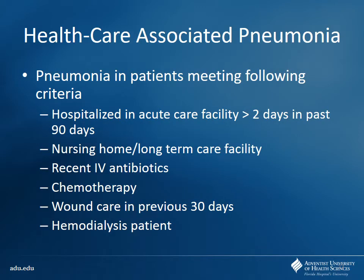Healthcare-associated pneumonias include patients who developed pneumonia after being in a hospital or acute care facility for more than two days in the past 90 days, nursing home or long-term care residents, and patients receiving recent IV antibiotics, chemotherapy, wound care, or hemodialysis. Dialysis patients go to centers Monday/Wednesday/Friday and are exposed to other recently hospitalized patients; chemo patients go to infusion centers and are already immunosuppressed.